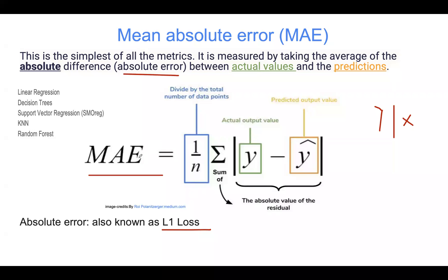Essentially here, mean absolute error is just a linear score, which means that all the individual differences, y minus y hat, are weighted equally in the average, the number of data points in our data set.